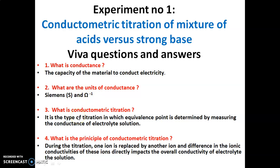Third question: What is conductometric titration? It is a type of titration in which we find the equivalence point by measuring the conductance of the given electrolyte solution. This is called conductometric titration.